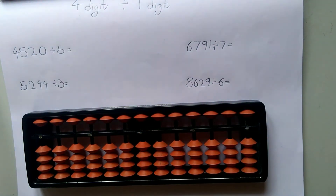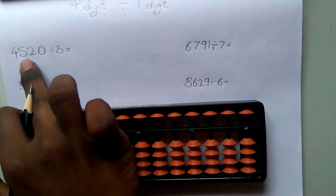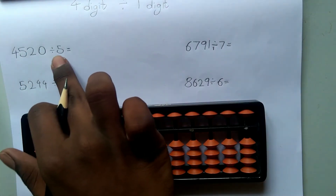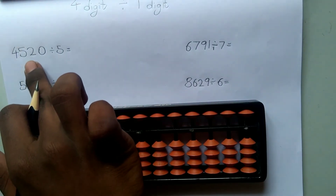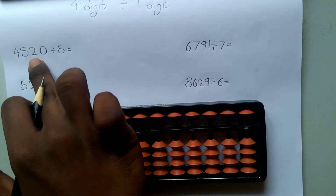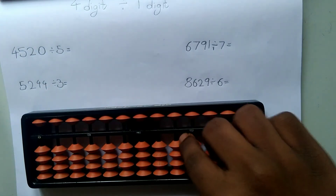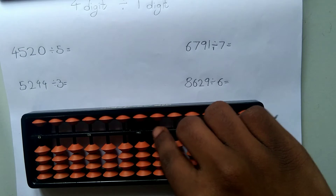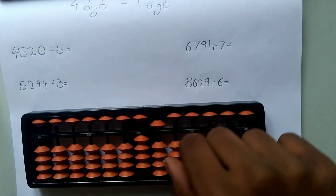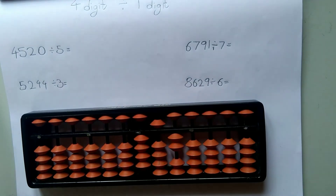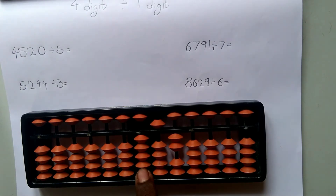First we have to represent the question: 4,520 divided by 5. We have to represent the first number, which is also known as the dividend. So: 1s rod, 10s rod, 100s rod, and 1000s rod — 4,520. Now we have to divide it by 5. Let's check the first digit: it's 4. 4 is less than 5, so we cannot use it.